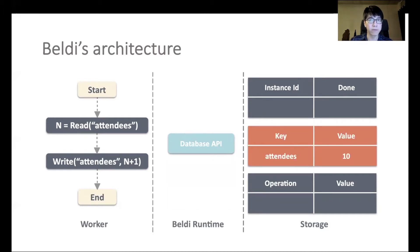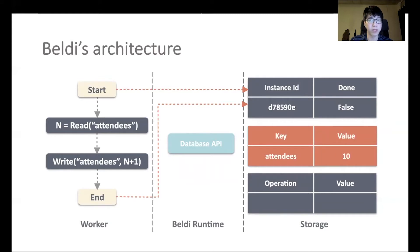Each Lambda gets three tables: a progress table where it tracks the progress of its entire execution, a user table where it stores data, and a log table where it logs all operations and return values. Once the Lambda starts, the cloud provider assigns it a unique ID — we call it the instance ID. The Lambda registers itself in the progress table using this ID as the primary key and marks itself as unfinished. Once the Lambda finishes, it marks itself as done in the progress table.